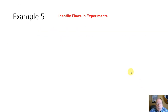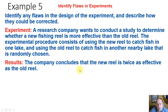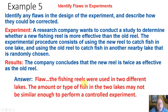Let's look at identifying problems or flaws in experiments. A research company wants to determine whether a new fishing reel is more effective than the old reel. They use the new reel in one lake and the old reel in another nearby lake, and conclude the new reel is twice as effective. The big problem is they used two different lakes — we don't know about the consistency between lakes, so it's not a good controlled experiment. We could make this better by testing both reels in both lakes.